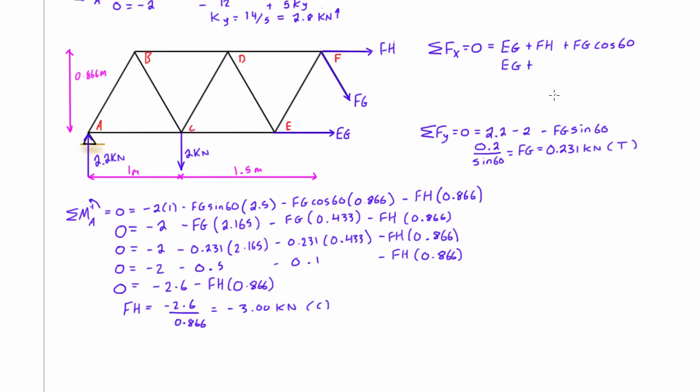So we had Fh, this was, well that will be minus 3. And then Fg cos 60. Fg was 0.231 and cos 60 is just 0.5. So that's all equal to 0. And when we just solve for Eg, we get that our Eg is 2.88.